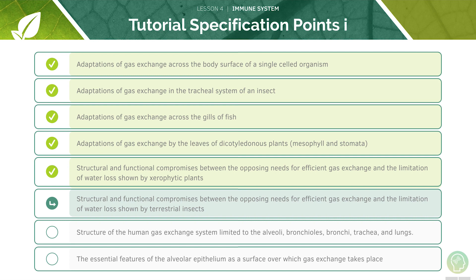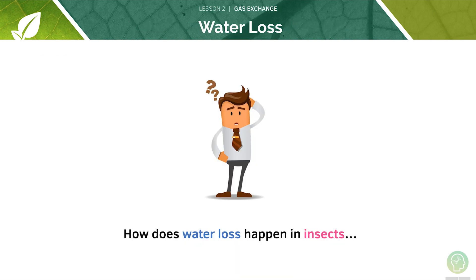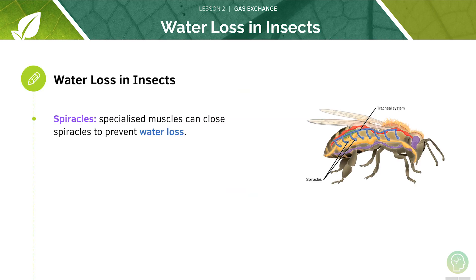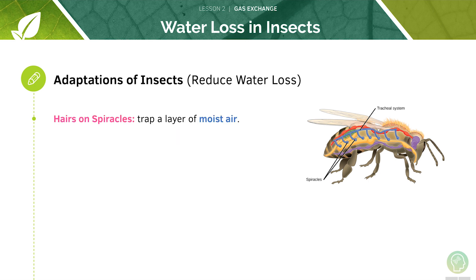Finally, we will look at the compromises in insects and how water loss happens in insects. They have specialised muscles to close the spiracles and prevent losing water. They also have hairs on the spiracles to trap a layer of moist air. Finally, they also have a thick cuticle to prevent water loss.